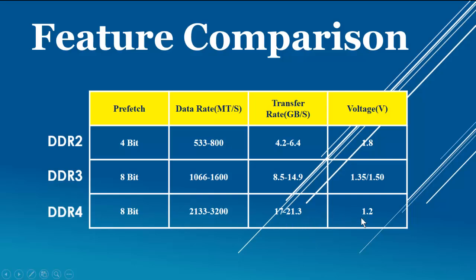DDR4 works on just 1.2 volts, which is very low as compared to DDR3 and DDR2. Therefore, DDR4 is the best choice as compared to DDR2 and DDR3.